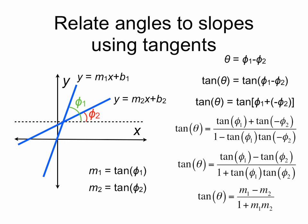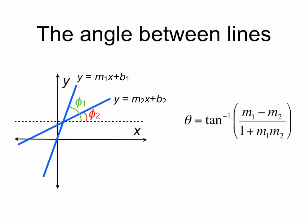If we take the arctangent of both sides, we get our final result: theta is equal to the arctan of m1 minus m2 over 1 plus m1m2.